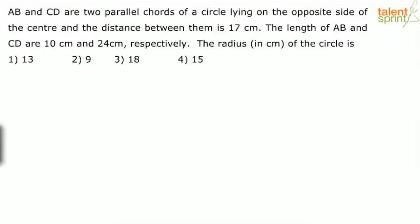So the first question: AB and CD are two parallel chords of a circle lying on the opposite side of the center, and the distance between them is 17 cm. The length of AB and CD are 10 cm and 24 cm respectively. The radius in cm of the circle is — and the given answer options are 13, 9, 18, and 15.